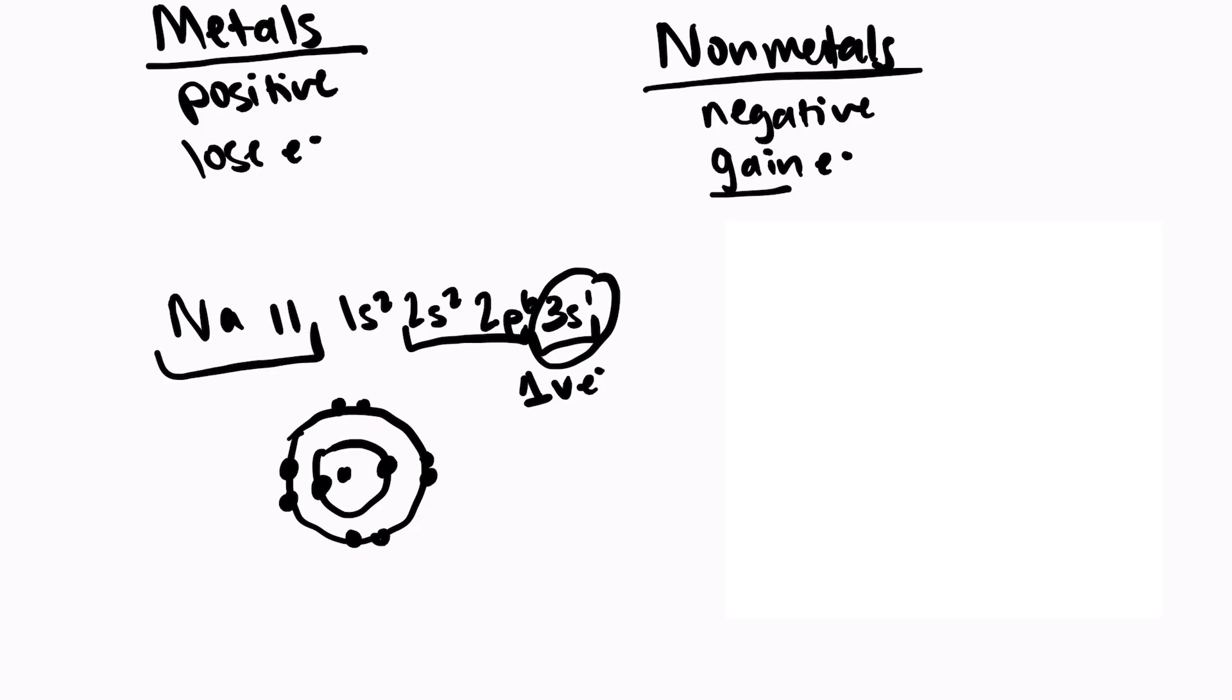So sodium just lost an electron. It lost that 3s electron, which means now it has more protons in the nucleus than it does electrons. Because sodium still has an atomic number of 11, so there's 11 protons there, but we lost 1 electron so there's only 10 electrons. So that means sodium would have an overall charge of plus 1.